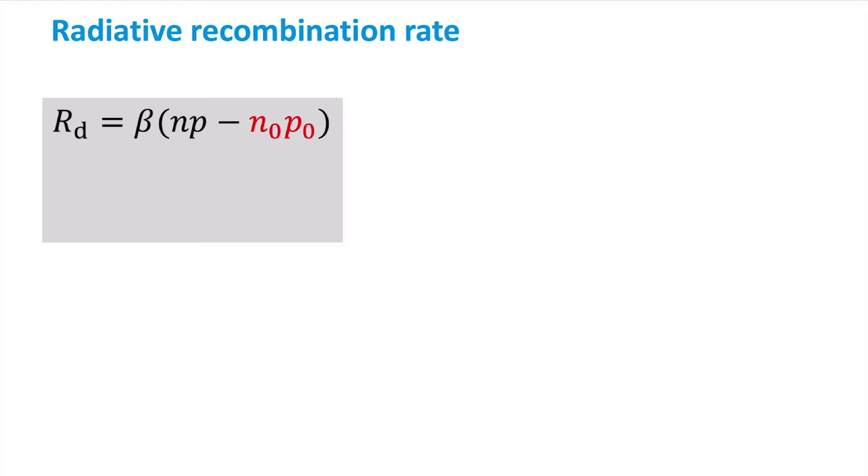The equilibrium concentrations N₀ and P₀ need to be subtracted, which leaves us with the net recombination rate.